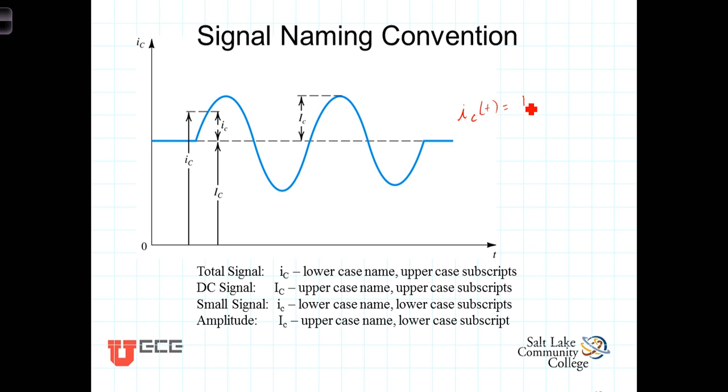This is equal to the DC component I sub C plus an AC signal that has an amplitude uppercase I lowercase c sine of omega t.